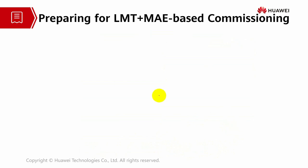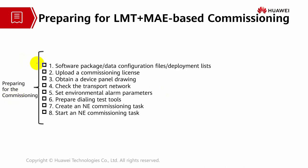Let's look at how to prepare for LMT and MAE-based commissioning. The preparation steps are: first, prepare the software package, data configuration files, and deployment list; upload the license; obtain the drawing; check the transport network; set the environmental alarm parameters; prepare the dialing test tools; create the commissioning task; and start the commissioning task.